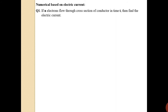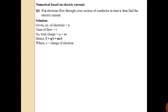Numerical 1: If n electrons flow through the cross-section of a conductor in time t, find the electric current. Given: number of electrons = n, total time = t, find current I. Using Q = ne from the quantization of charge concept, the total charge flowing is ne. Then using I = Q/T, we get I = ne/T, where e is the charge of one electron. Since no numerical values are given, this is the final answer: I = ne/T.